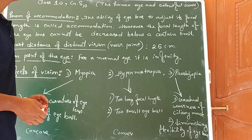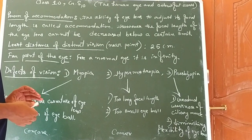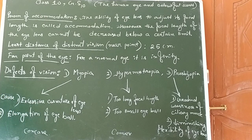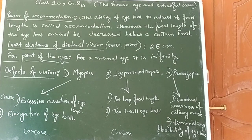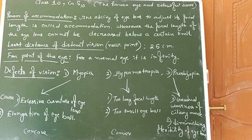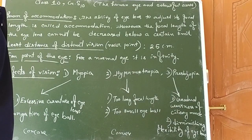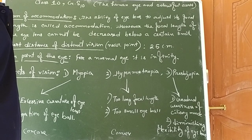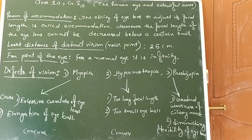Students, we have started Chapter 11: The Human Eye and Colorful World. We have studied about the human eye — how it looks, what organs are present, about ciliary muscles, eyeballs, and nerves.